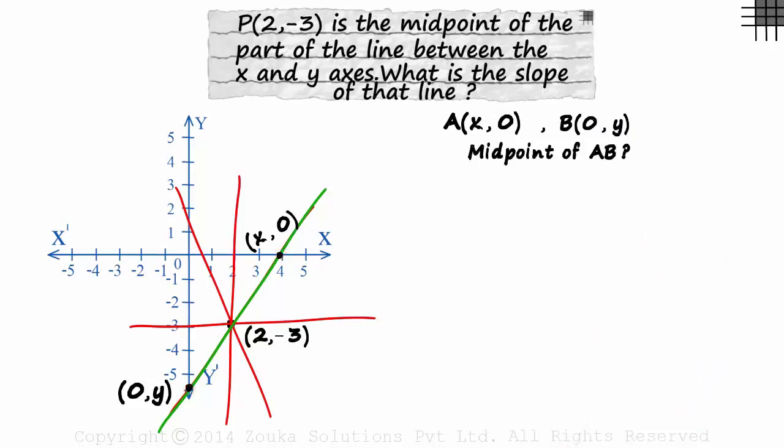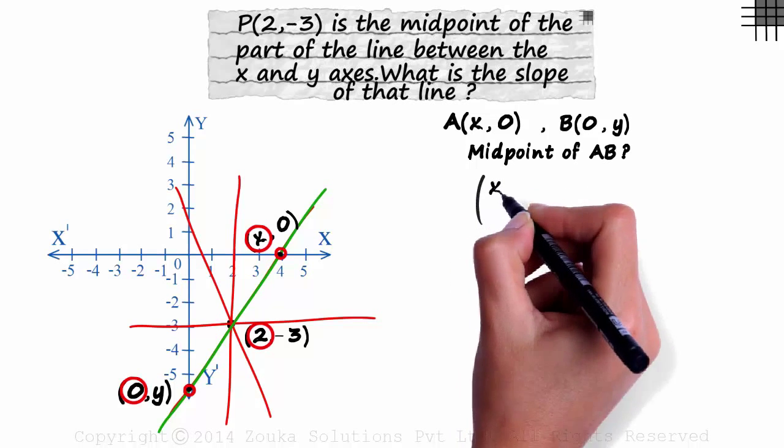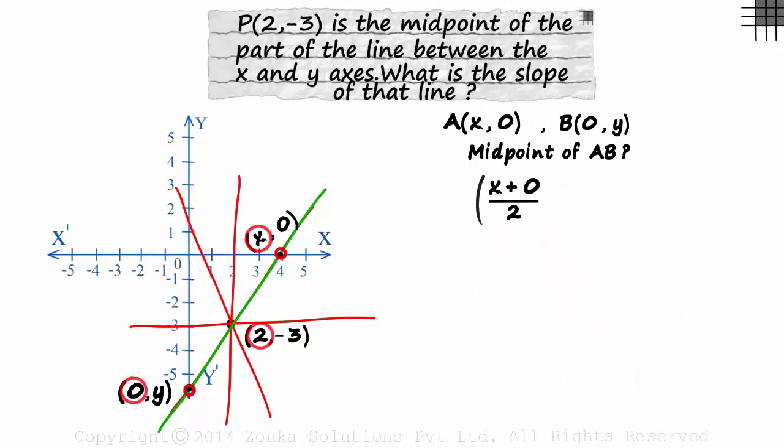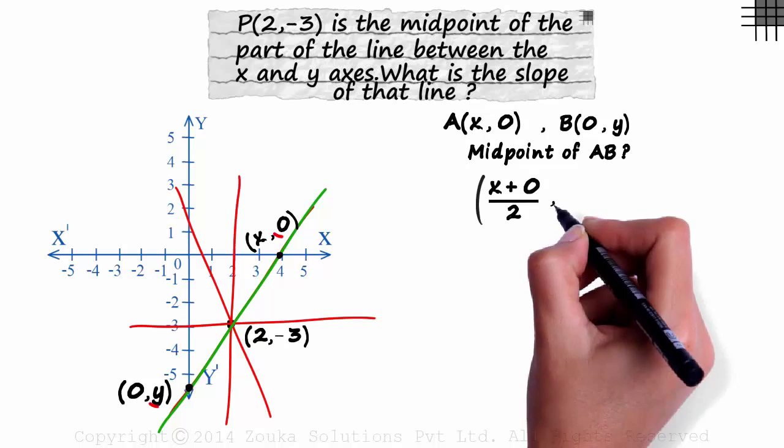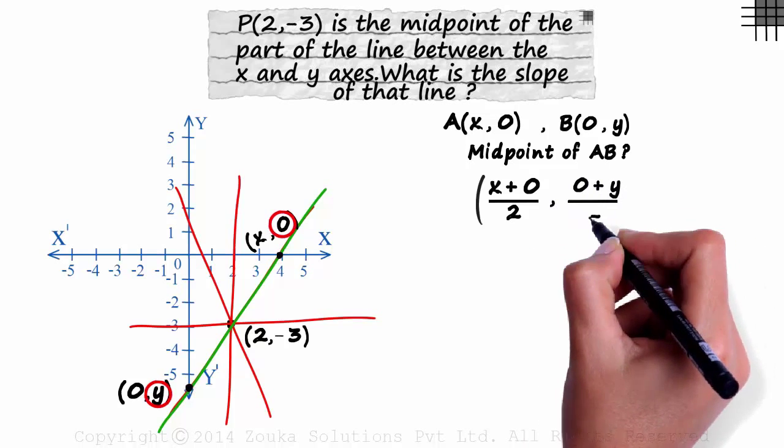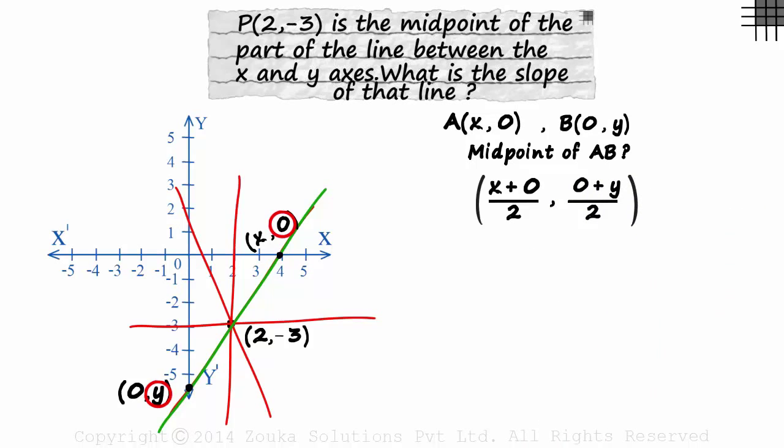What will be the midpoint of A, B? The x coordinate of the midpoint will be the average of the x coordinates of the endpoint. It will be x plus 0 over 2. And the y coordinate will be 0 plus y over 2. That is the average of the y coordinates.